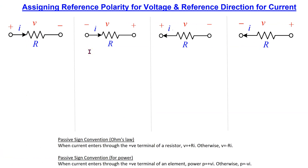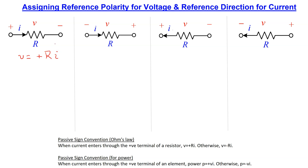The assignments of the reference polarity for the voltage and the reference direction for the current are entirely arbitrary. However, once we have assigned the references, we must write all subsequent equations according to the chosen references. For a resistor there are four possible ways to assign reference polarity for voltage and reference direction for the current. In the first case, the conventional current I is entering the resistor terminal marked plus. Hence we use Ohm's law with a positive sign and write V equals plus R times I, and we use power P equals plus V times I.